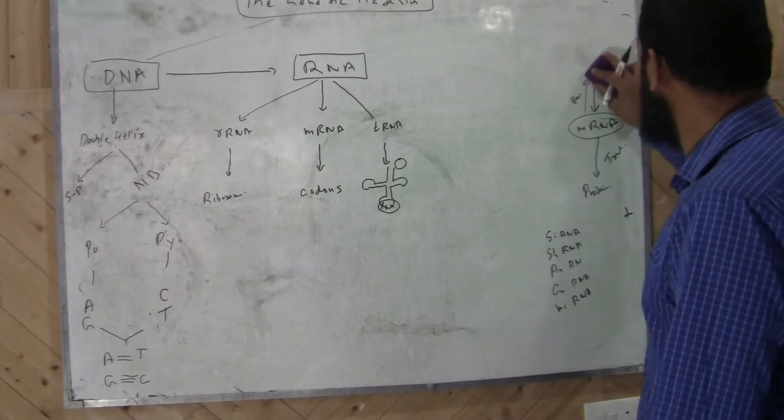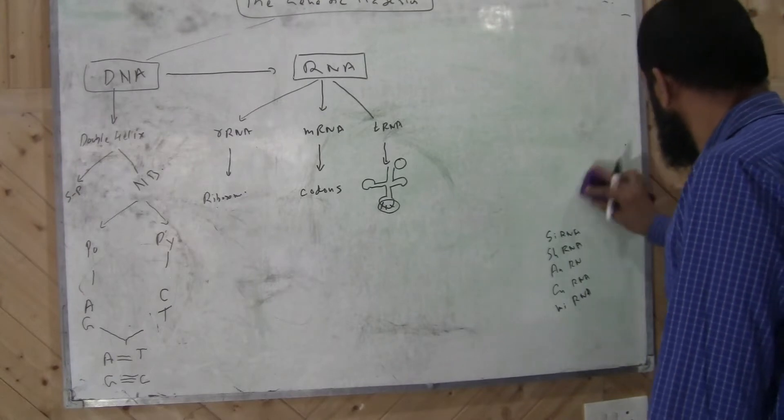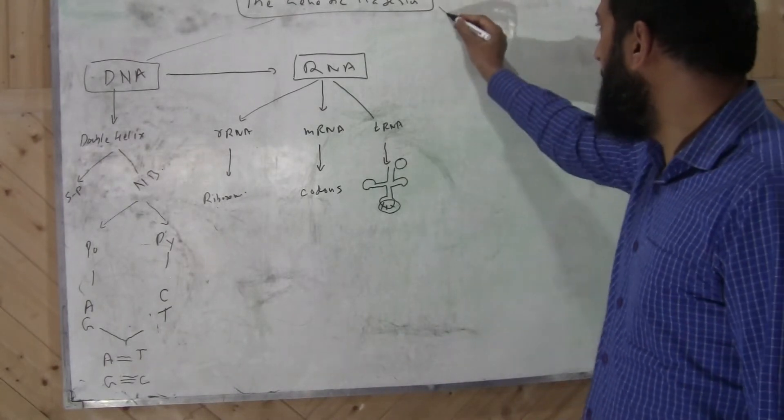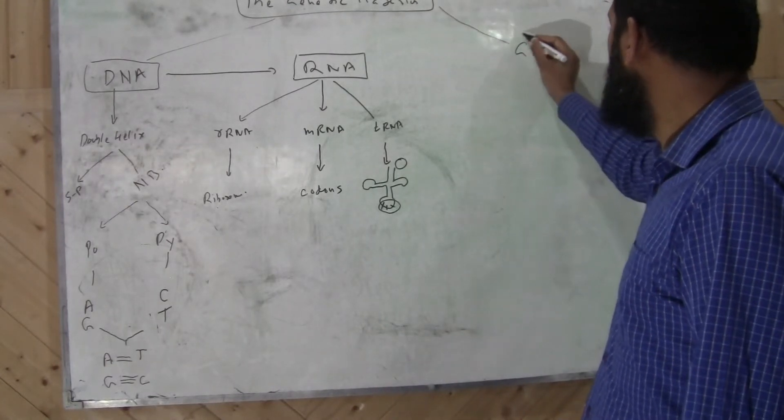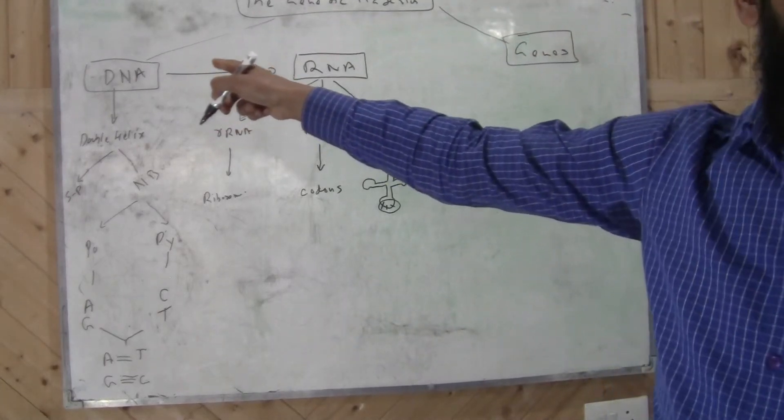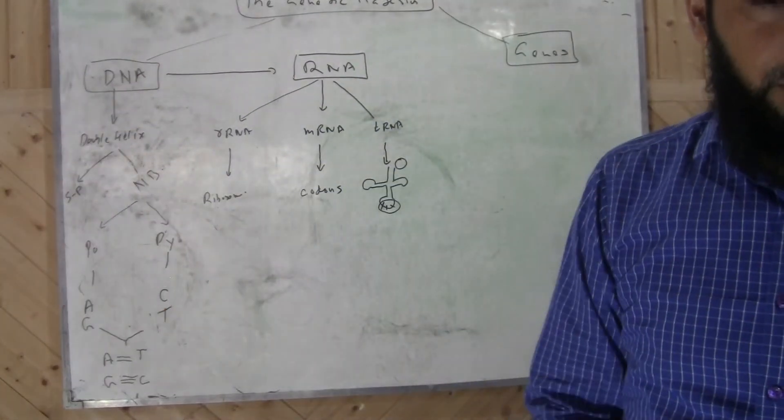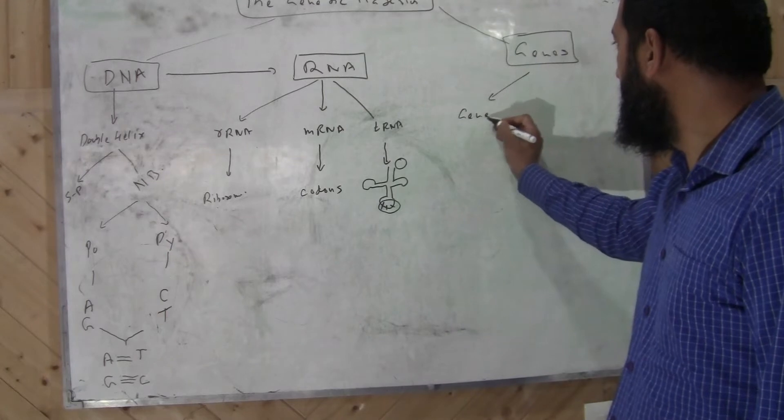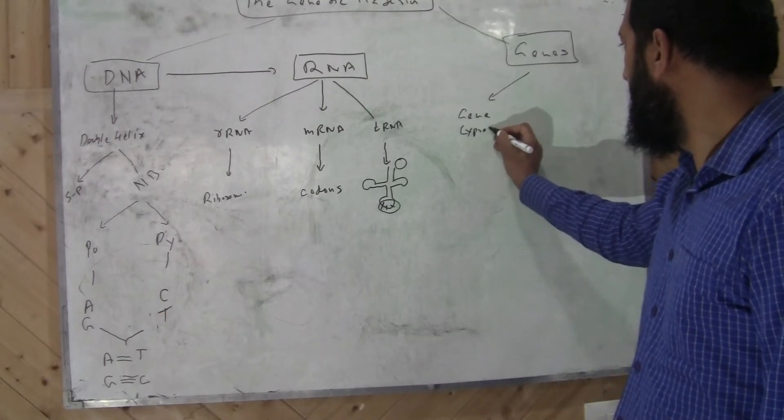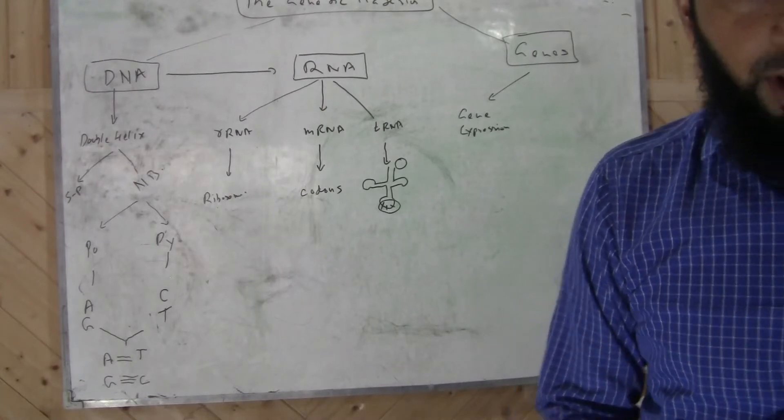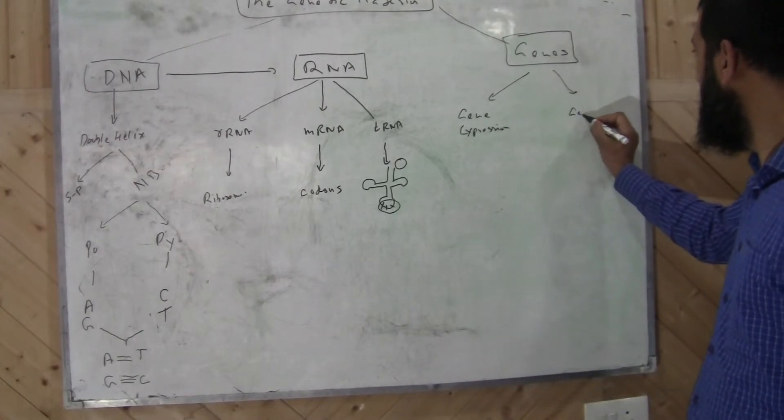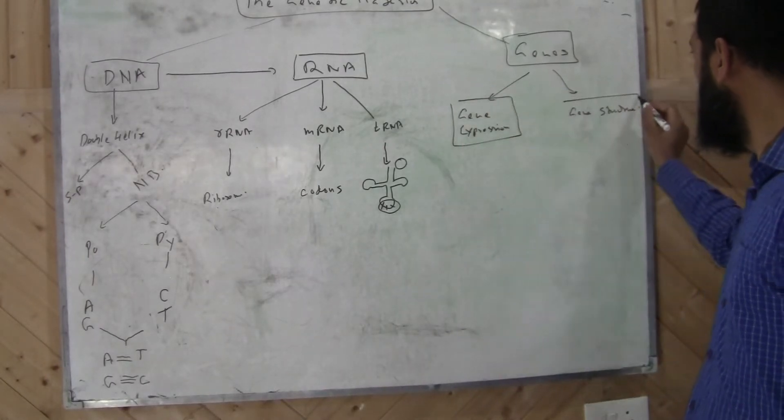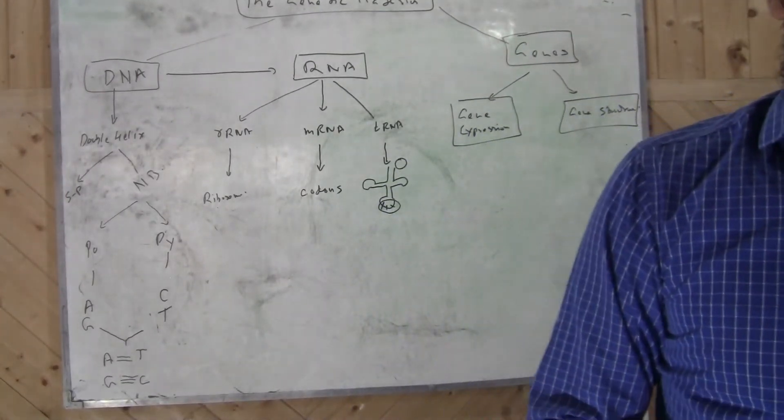Then apart from this, the genetic material is arranged in the form of genes. Of course, the gene is nothing but the segment of DNA that codes for a diffusible product. You have two aspects of genes: one is gene expression, and gene structure. Gene expression and gene structure.